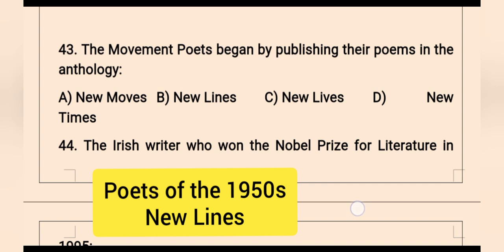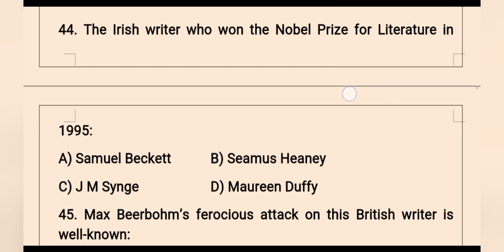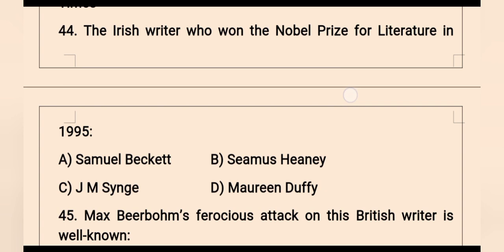Question 44: The Irish writer who won the Nobel Prize for Literature in 1995 — options are Samuel Beckett, Seamus Heaney, J.M. Synge, and Maureen Duffy. The right option is Seamus Heaney. His famous works include Death of a Naturalist, which is a collection of poems.